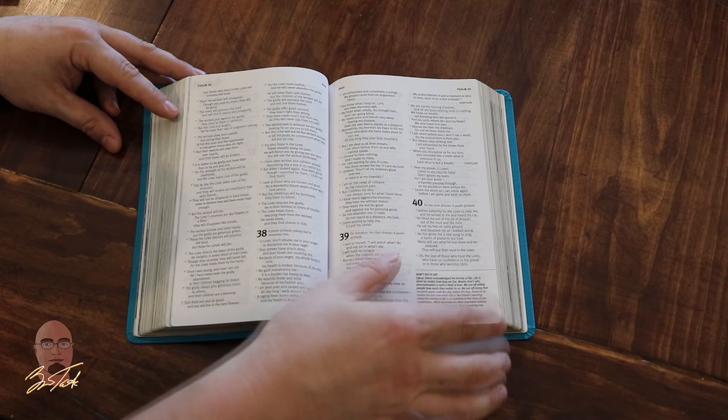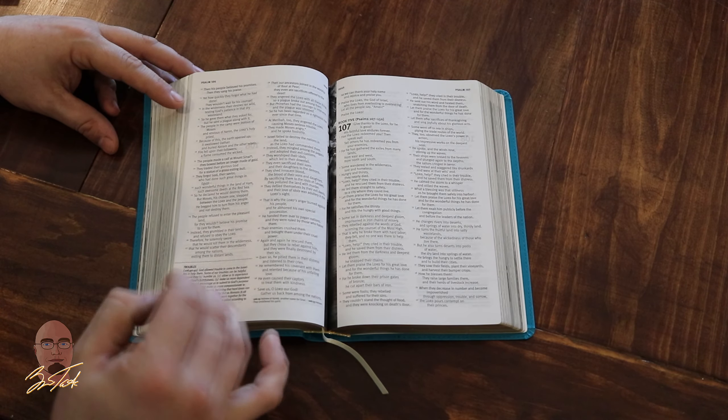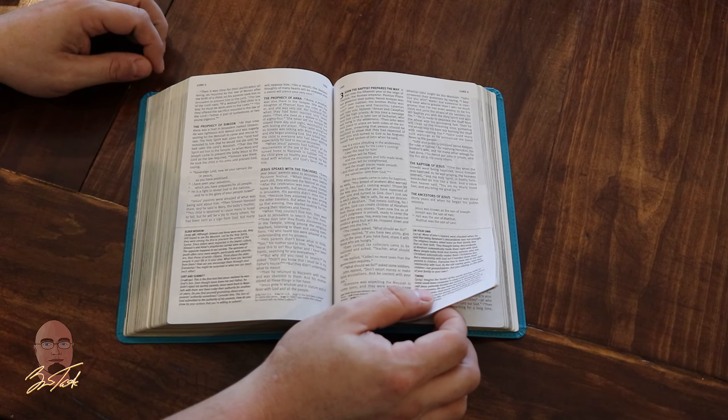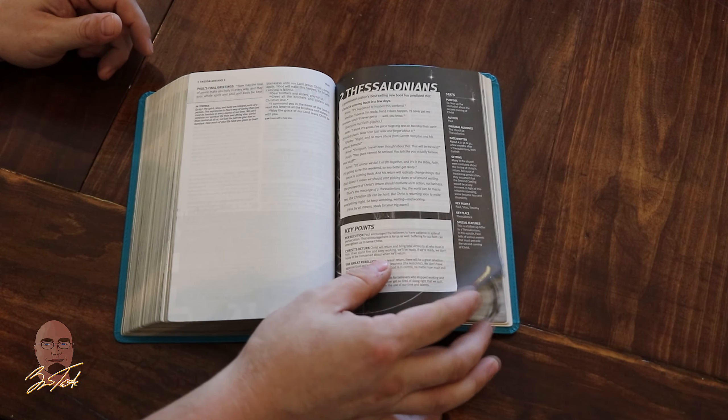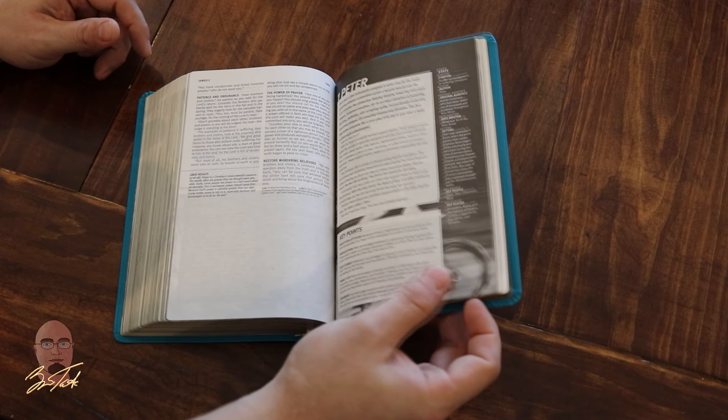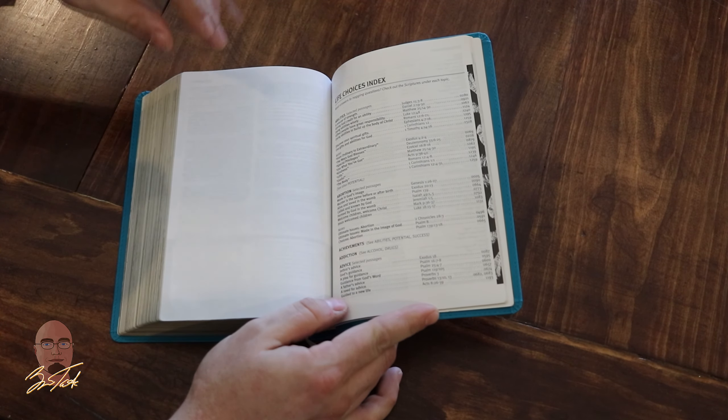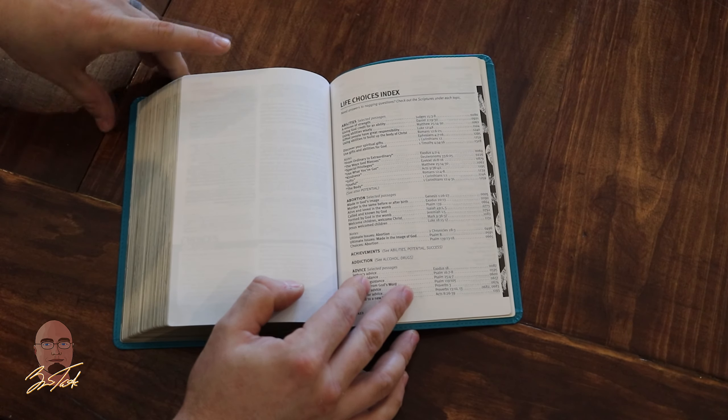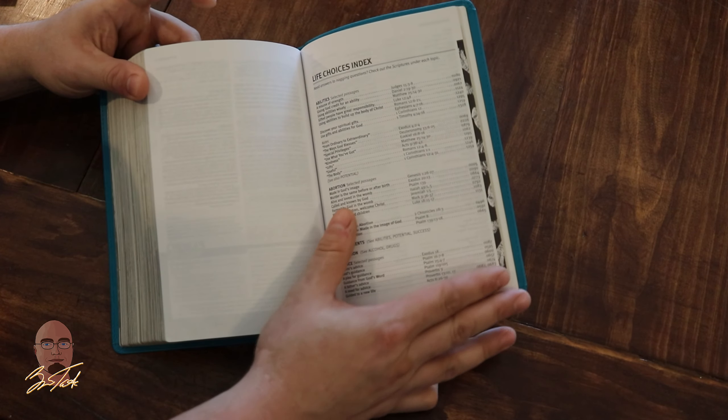There's nothing wrong with not having tons and tons of notes. It is a black letter text, as you can see there in John. We'll get to the back and you'll have all these indexes. All right, so we're at the end of Revelation 22, and we immediately turn to the index section.